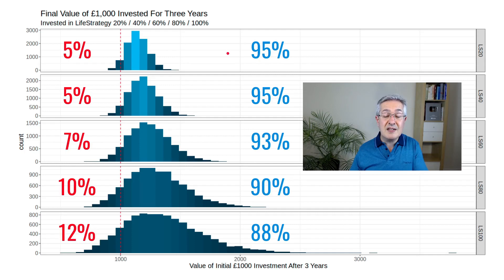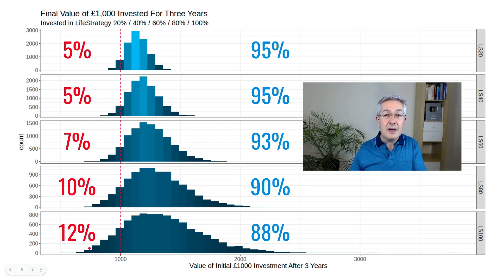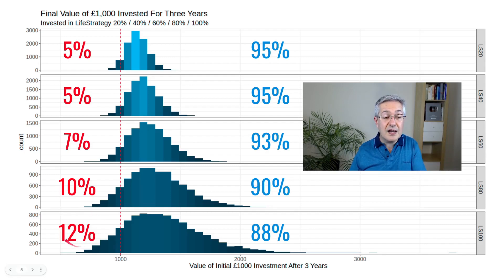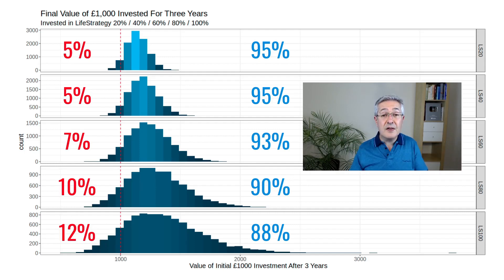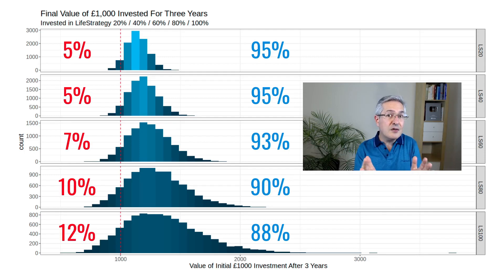That happened 95% of the time over a three-year period for Life Strategy 20, which is the least risky of the five funds. As we dial up the risk, the general shape of the distribution gets broader — our uncertainty about the outcome increases. And critically, the percentage of time when the return is negative over that three-year period increases, such that for Life Strategy 100, which is all equity, it happens 12% of the time that we end up with less than we started. If that's the deposit for your house, you're really in trouble. This is why we have to dial down the risk over a shorter period of time.